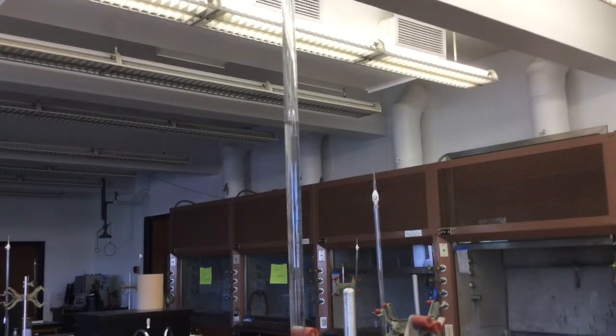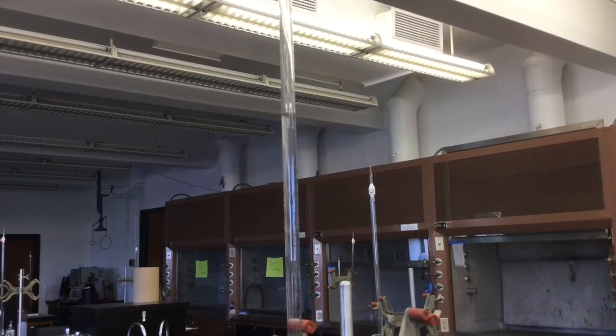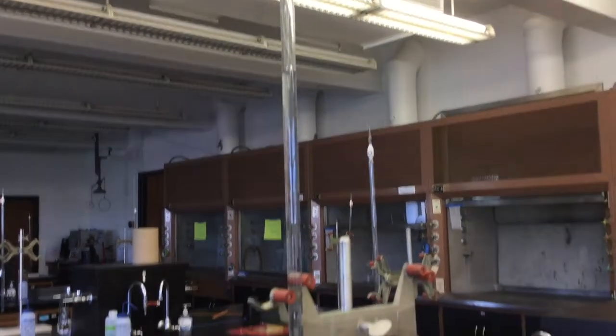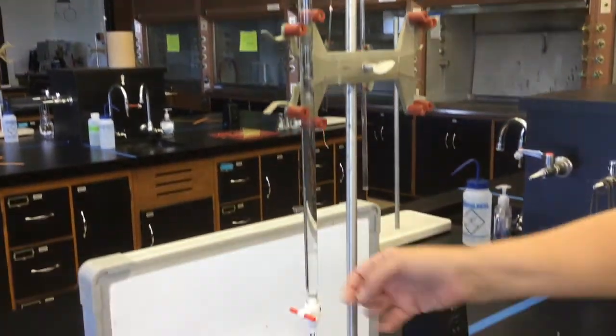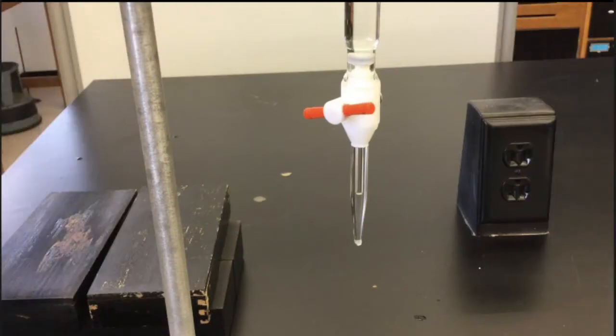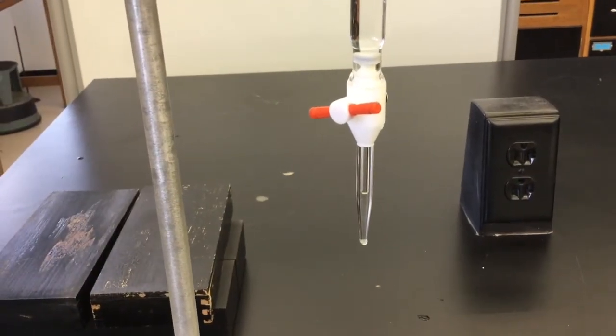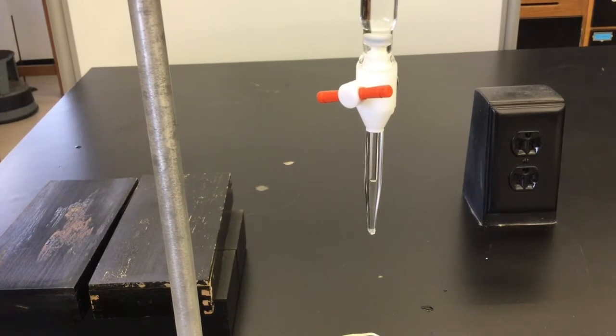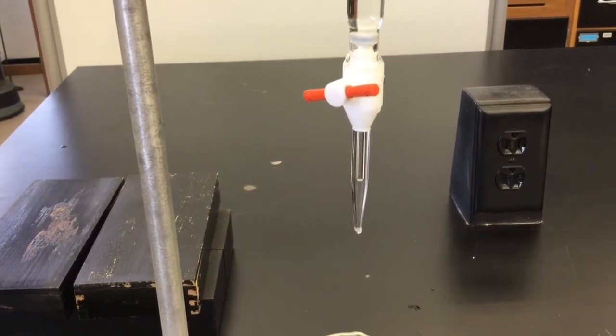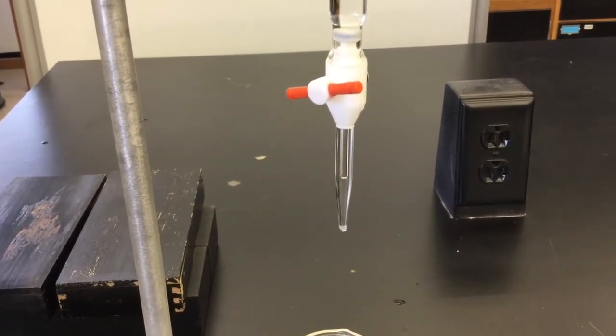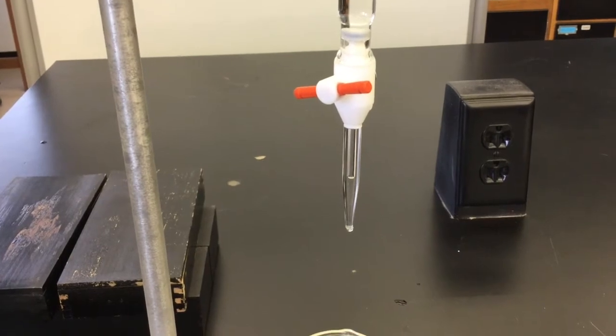Before you begin the titration, you're going to need to make sure there are no air bubbles. Check the burette and the bottom. Notice that there is an air bubble. The presence or absence of an air bubble can change the measurement that we have on our burette. So we want to make sure before we start that the air bubble is gone.